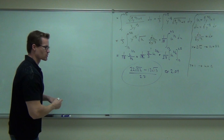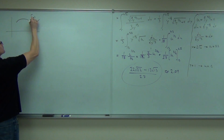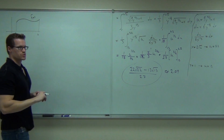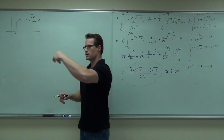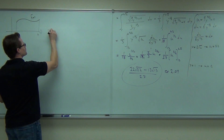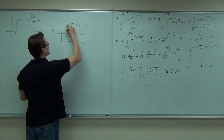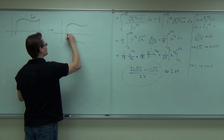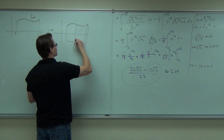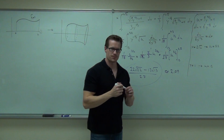I want you to imagine my famous curve, and I want you to revolve it around the x-axis. You've seen that before — you get this sort of vase-looking thing on its side.